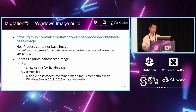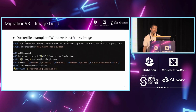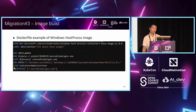Migration step three: we need to build a new Windows image for the host process container. The good news is that the host process container-based image size is very, very small — it's only a few KB. Compared to the nano server image, which is around 100 or 200 megabytes, it's much smaller. Also, the host process container image is always compatible, meaning a single host process container image can run on any OS version, for example Windows Server 2019, 2022, or later. The Dockerfile is quite straightforward: you only need to reference the base image, copy the binary to the Windows image, state the environment path, and set the user as container administrator.